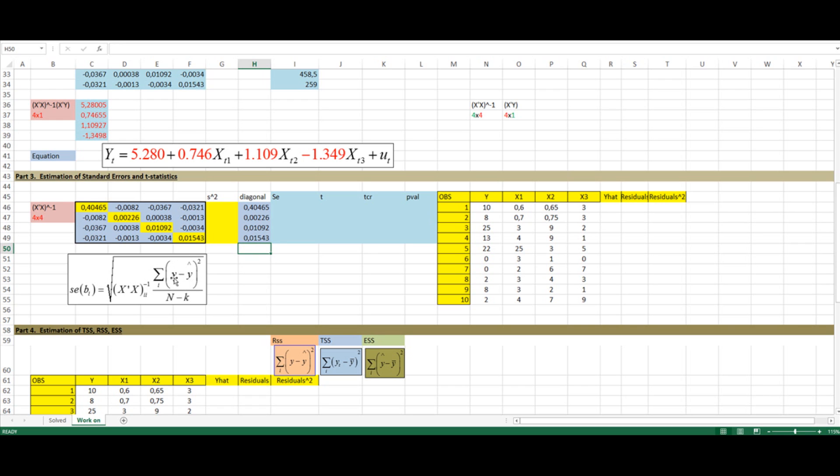Next, I need to get the sum of y minus y hat. And for that, I have added the data over here so I can get y hat. My y hat for the first observation is going to be equal to 5.28 plus 0.746 times x1, and x1 is going to be 0.6.